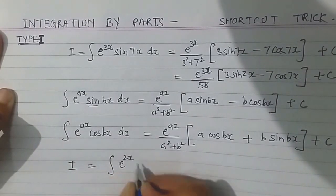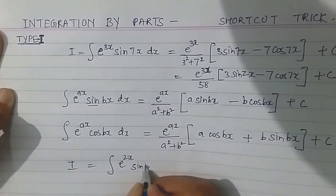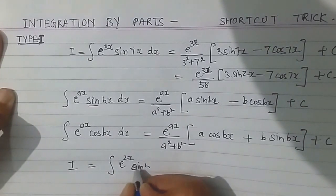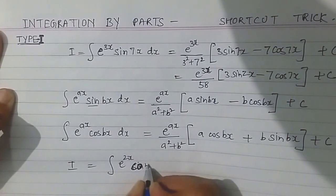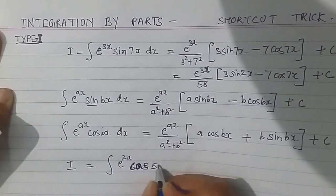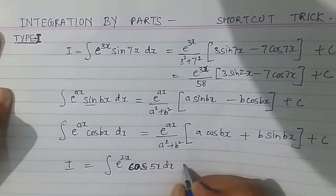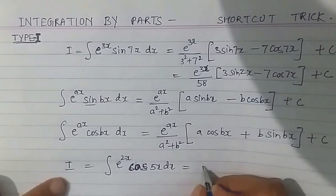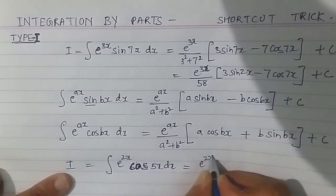I is equal to the integral of e raised to the power 2x cos 5x dx.